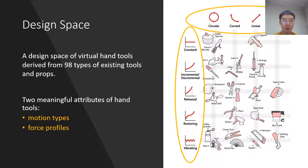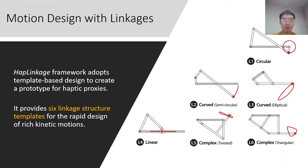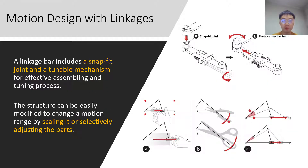Then I will introduce our framework design from these two attributes. For the motion design with linkages, we provide six linkage structure templates, including circular, semicircular, elliptical, linear, twisted, and triangular motion for the rapid design of rich kinetic motions. The linkage route includes a snap-fit joint and a tuneable mechanism for effective assembling and tuneable process. The structure can be easily modified, for example, to scale the size or to change the range of motion by selectively changing linkage lengths.